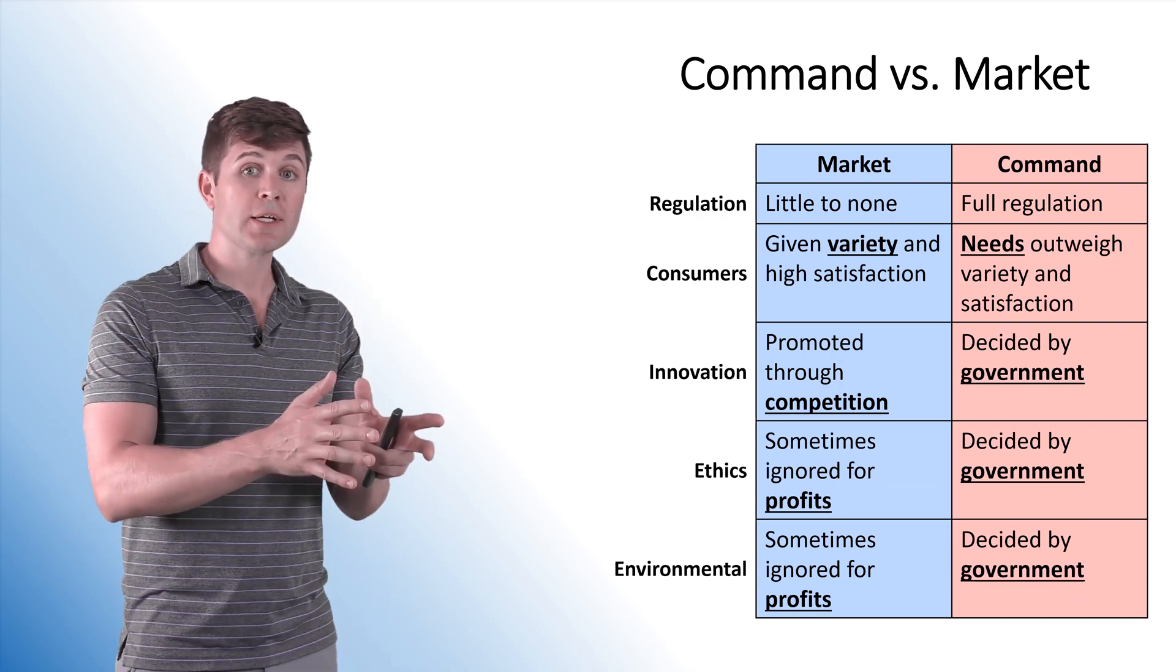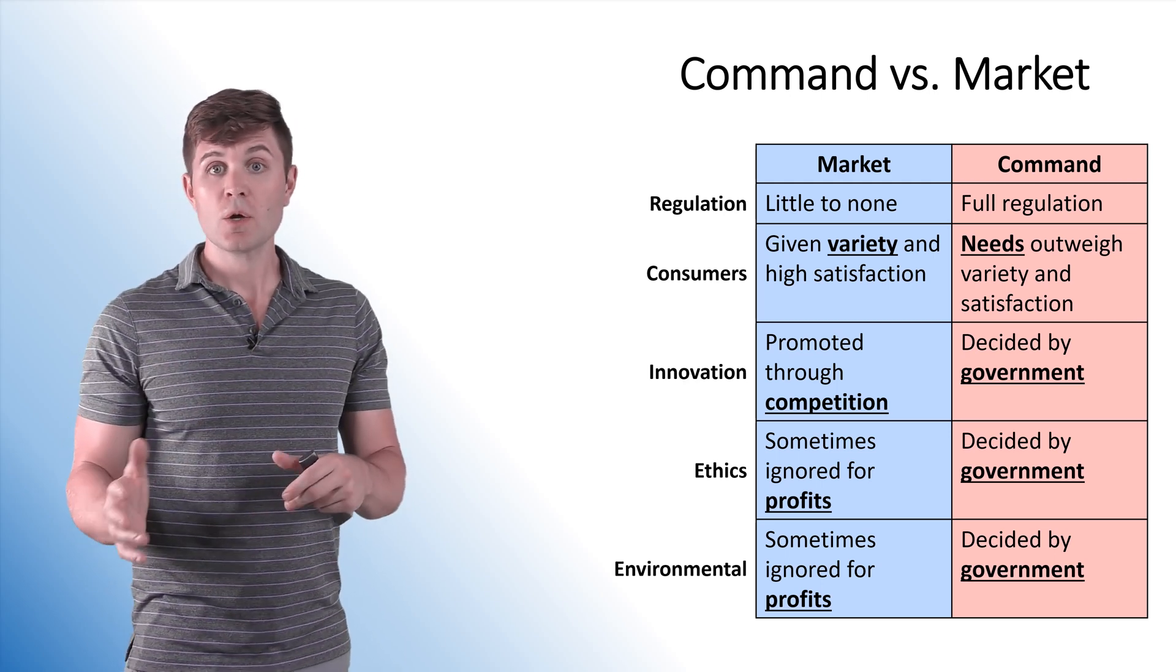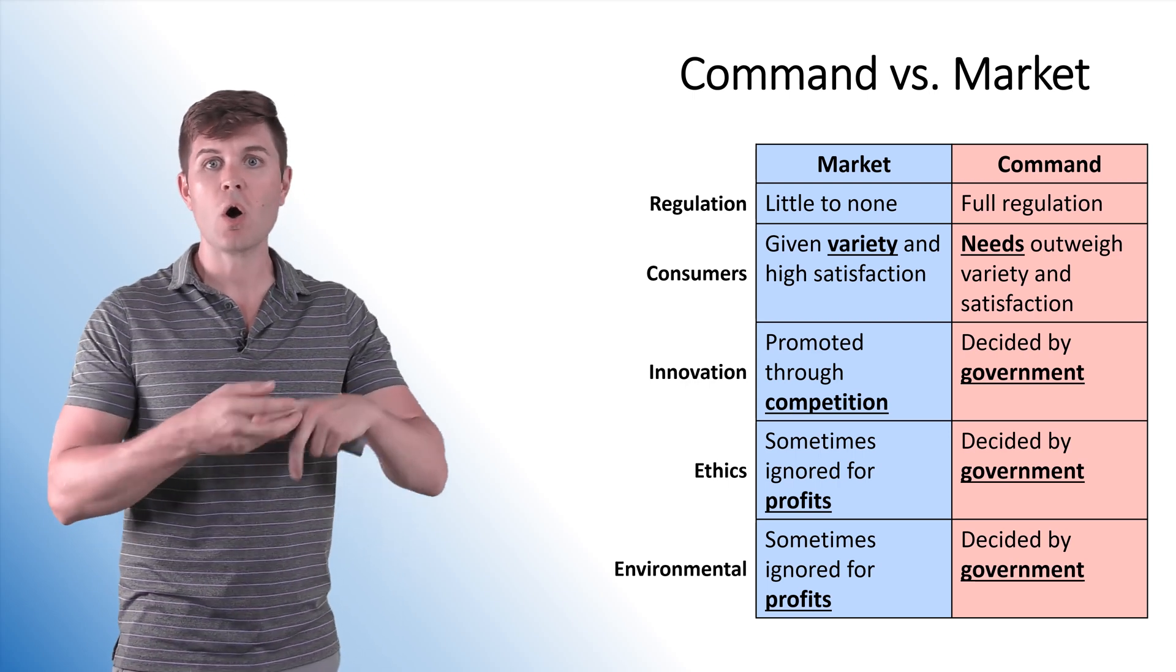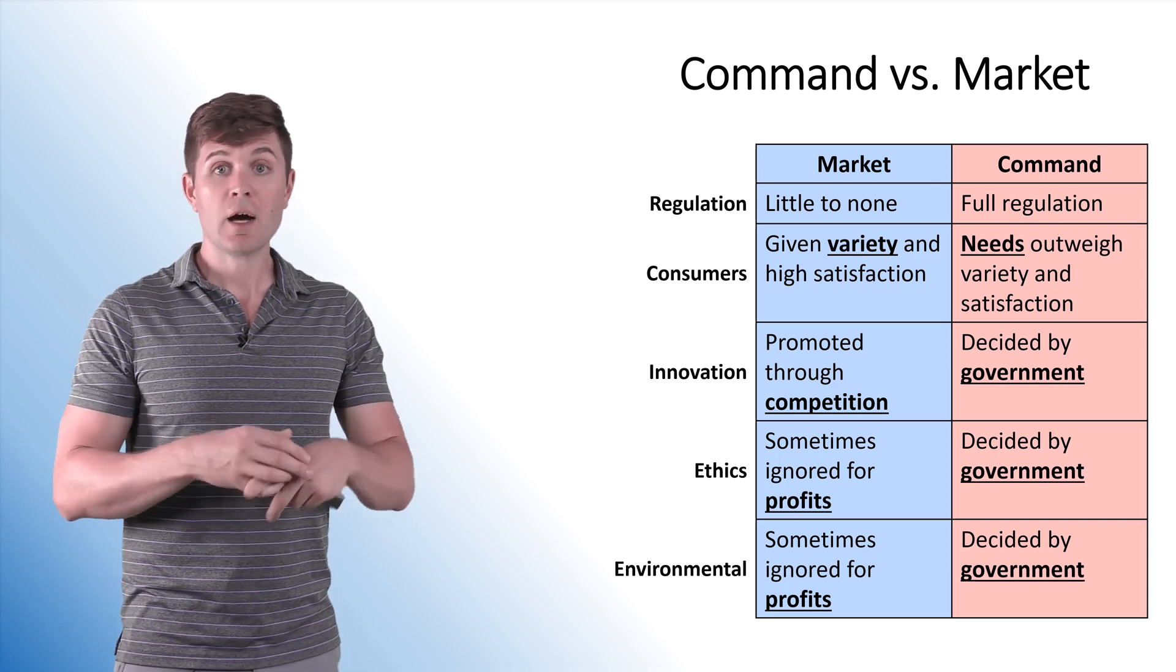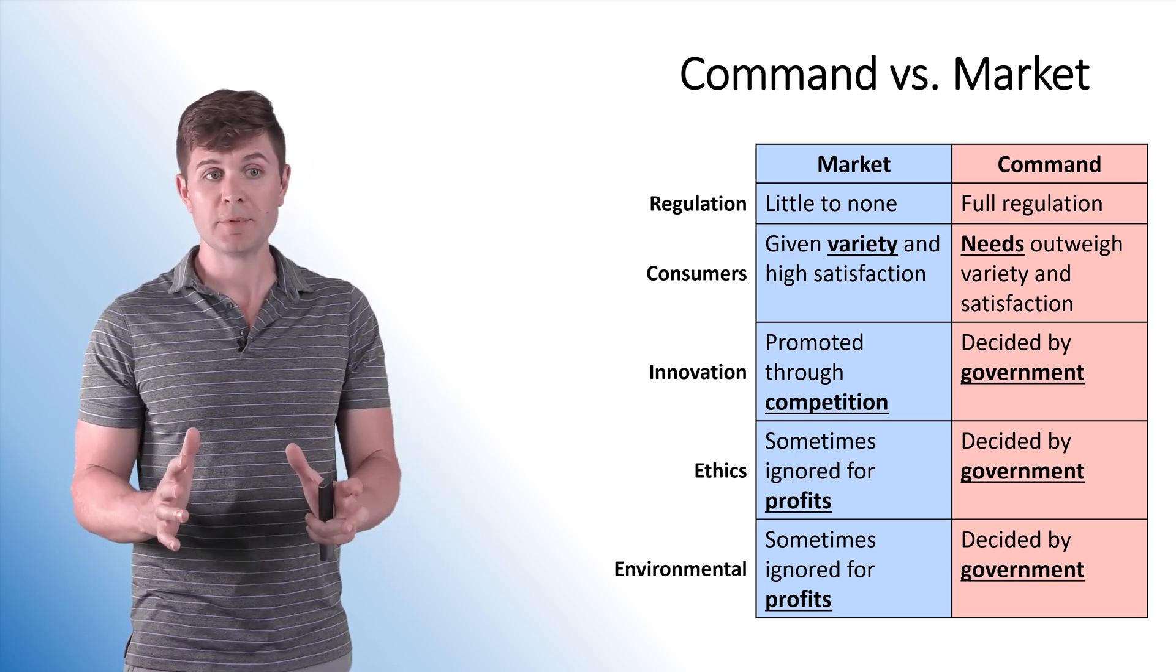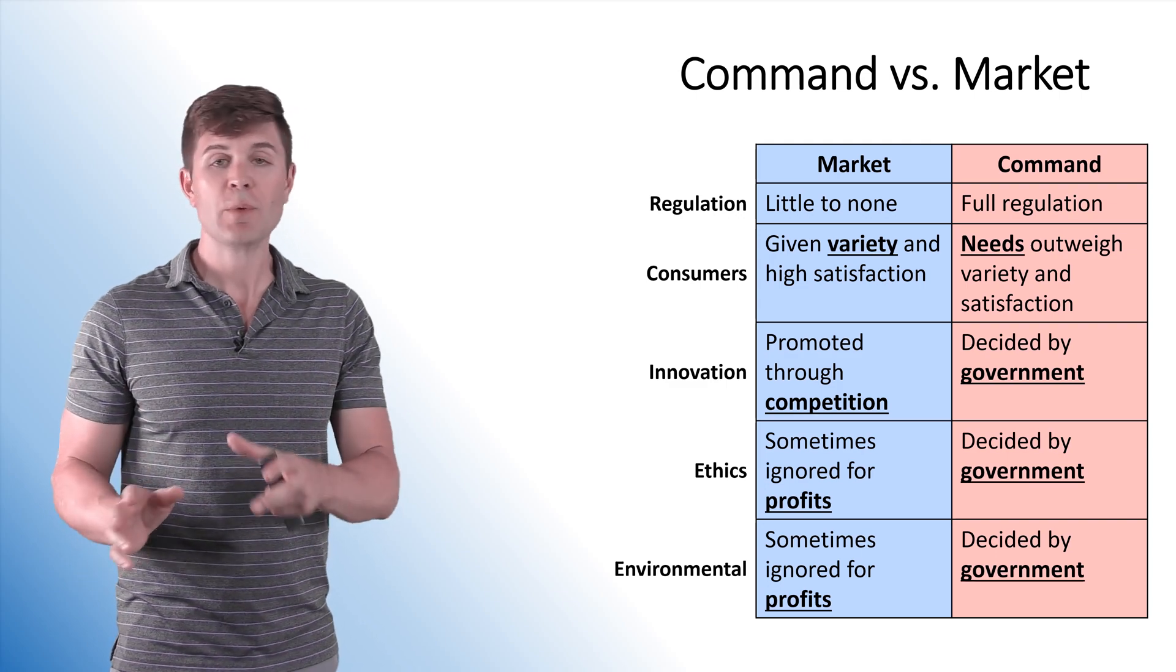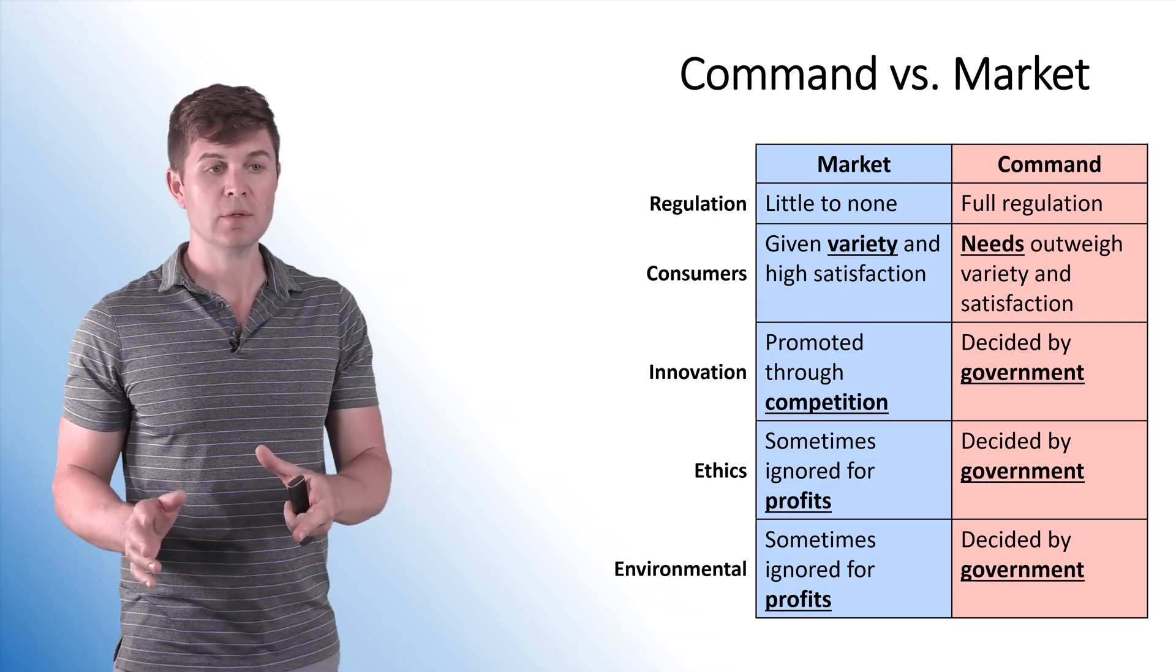Now, regulation in a market economy, in a pure market economy, very, very little, if any at all. In a command economy, regulation is full. The government's deciding every aspect of it. They can control worker laws. They can control how many hours a day you work. All these things are determined by the government. Consumers in a market economy are given a variety of different goods to choose from. There's high customer satisfaction. Quality is higher, all due to that competition. Now, when we get to a command economy, the needs outweigh the need for variety and satisfaction. So they focus on what the consumers need. And we might not see choices. You might have very limited choices, but you're getting what you absolutely need.